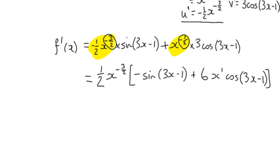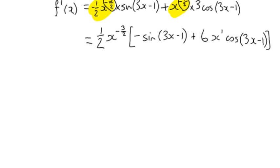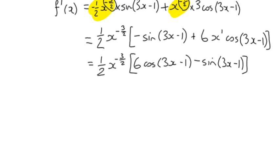It's not, again, the clearest of simplification. But we can change them around, probably, and do 6 cos 3x minus 1 minus sine 3x minus 1. And I guess that's probably about as good as I can do it.